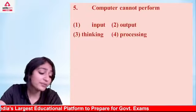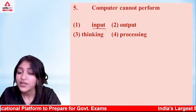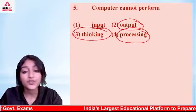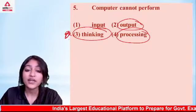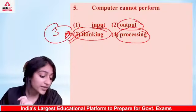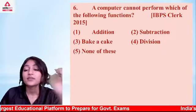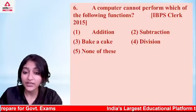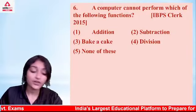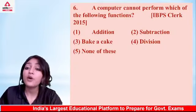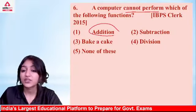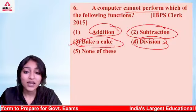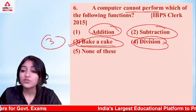Next question: what can a computer NOT perform? Obviously it can do input, output, and processing, but it cannot think on its own — it has no brain. That is a function which human beings perform. The answer is option number 3. A computer can do addition, subtraction, and division, but it cannot think independently.